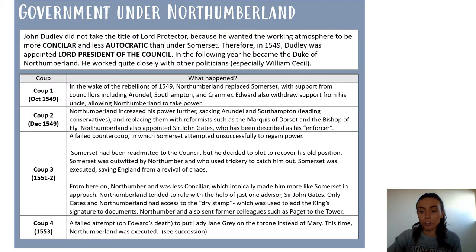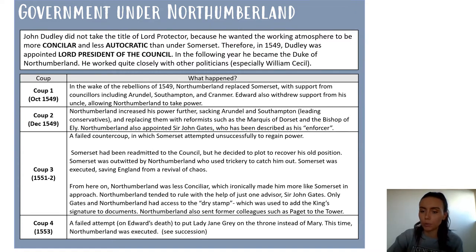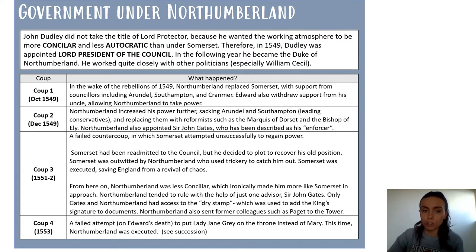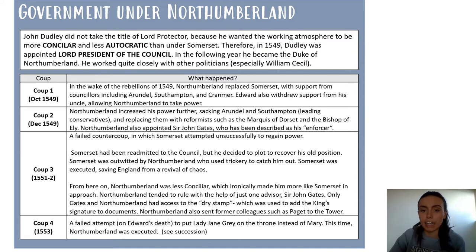Starting with the key question of government, John Dudley does not take the title of Lord Protector, which is the title Somerset had whilst ruling on Edward's behalf. That's because Dudley wants his working atmosphere to be more conciliar — he wants to work alongside a council and have other people's input into policies. He doesn't want to be autocratic, making decisions by himself, which had been the case under Somerset. So John Dudley rejects the title Lord Protector and becomes instead Lord President of the Council. It's in the following year that he gets the title Duke of Northumberland.